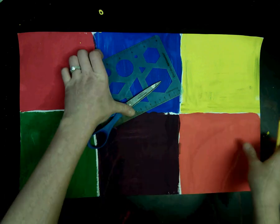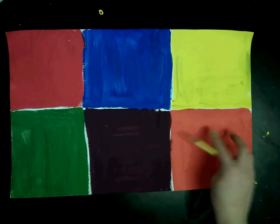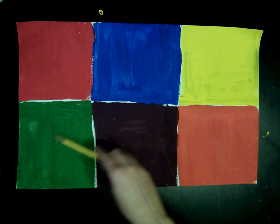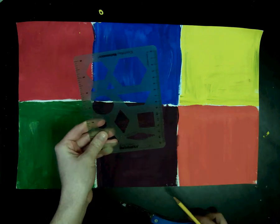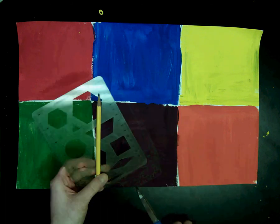To do this you will need your paper that you painted last week where we mixed secondary colors using the primary colors. You will need a tracer, a pencil, and scissors.